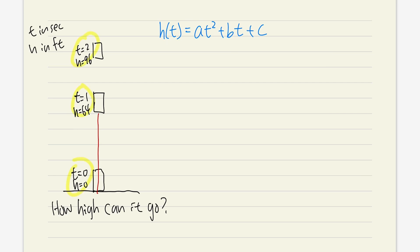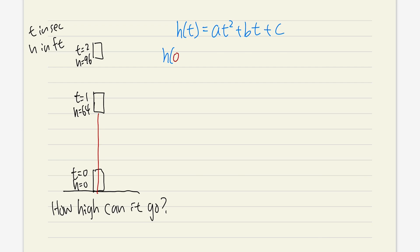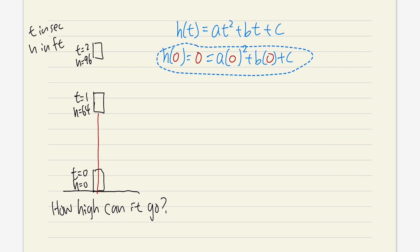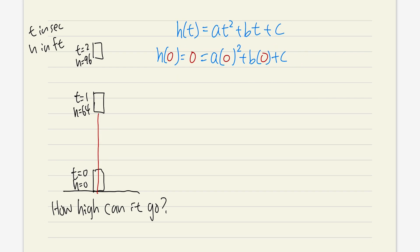So h(t) = at² + bt + c. I gave you three data values because we have three unknowns: a, b, and c. First, when t=0, h=0, so plugging in: a(0²) + b(0) + c = 0. This means c=0. In fact, c is the initial position, and since the rocket starts on the ground, c must be zero — the initial height.